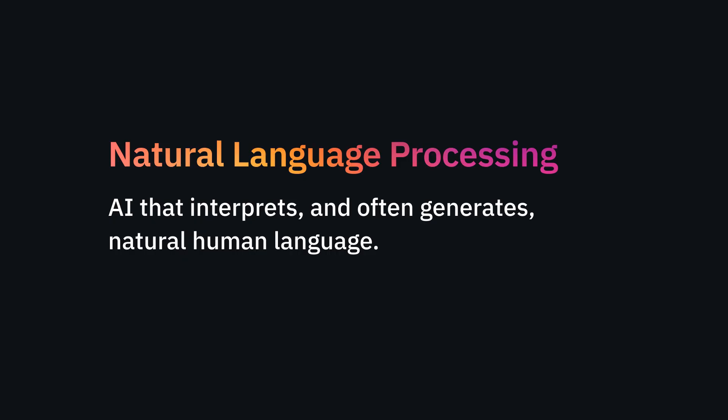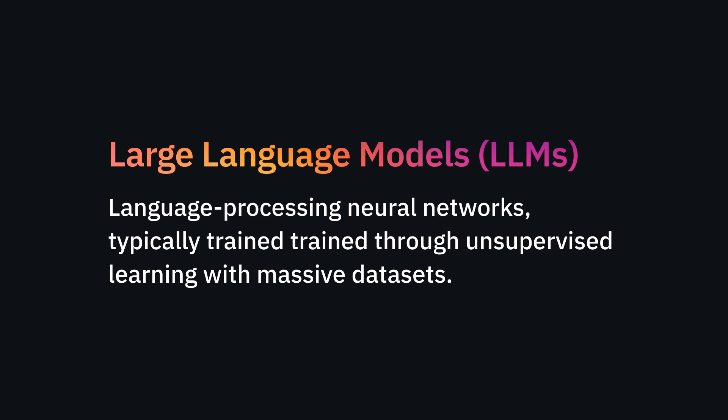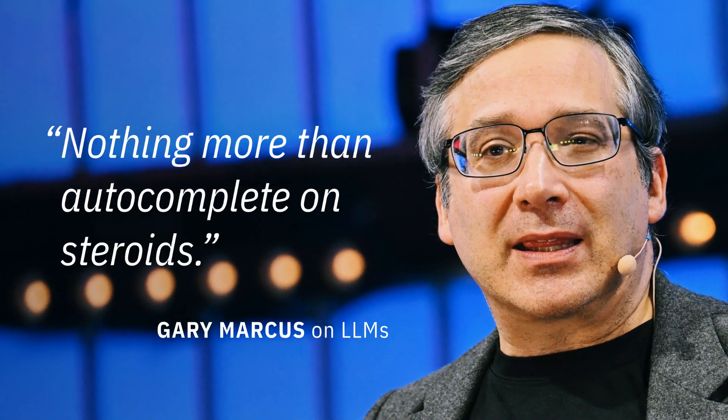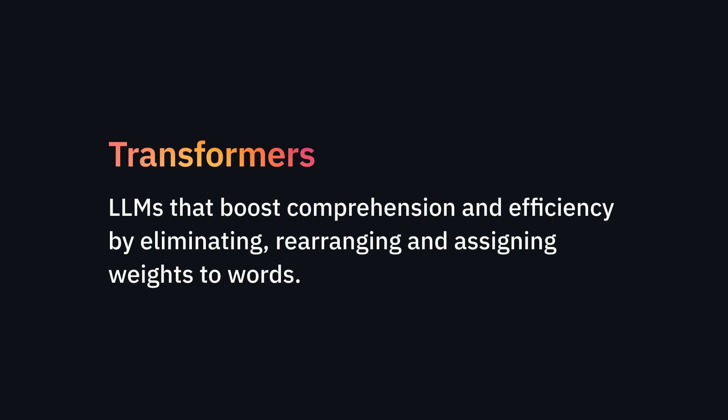Natural language processing is a type of AI that interprets and often generates natural human language. Depending on the application, language is accepted and returned as text or audio — spell checkers, translators, and chatbots all employ natural language processing. Neural networks that have been trained and deployed are known as models, and in the case of language processors, those models are known as large language models, or LLMs. LLMs usually train through unsupervised learning with unlabeled data sets comprising billions of web pages and digitized books. The celebrated AI expert Gary Marcus described LLMs as autocomplete on steroids. LLMs built on a transformer architecture have elevated comprehension and operational efficiency because they can eliminate, rearrange, and assign weights to words — a technology discovered by engineers at Google in 2017 that set the stage for today's AI boom.